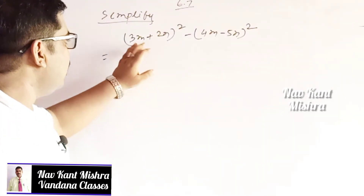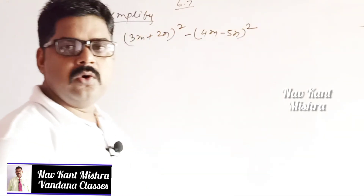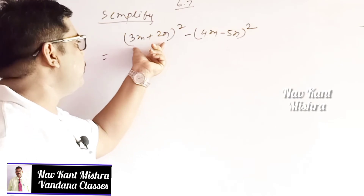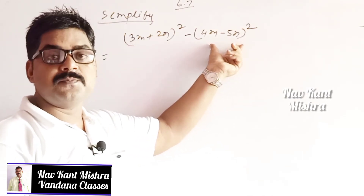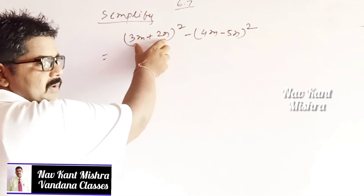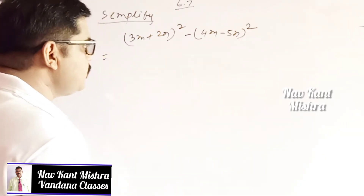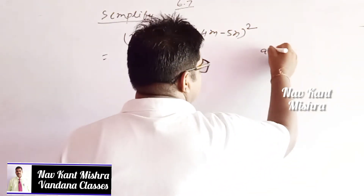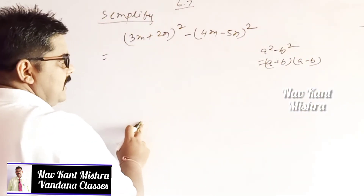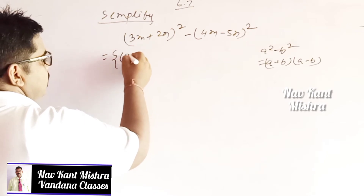My dear student, the question is 3m plus 2n whole square minus 4m minus 5n whole square. This can be solved by considering 3m plus 2n as a and 4m minus 5n as b, then applying the formula a square minus b square equals a plus b into a minus b.